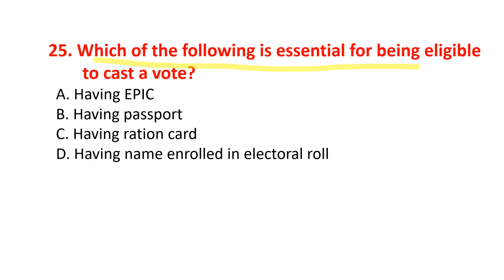Which of the following is essential for being eligible to cast a vote? Options include having an EPIC, having a Passport, having a Ration Card, or having one's name enrolled in the electoral roll. The most important is having one's name enrolled in the electoral roll — if a person's name is enrolled, he or she is eligible to cast a vote. The correct option is option D.